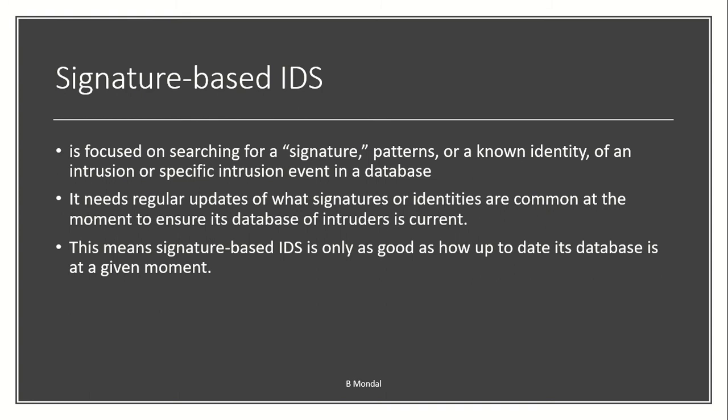The signature or identity of an intrusion is stored in a database which has been maintained previously in the IDS. It needs to update the database regularly; otherwise, if there is a new signature, it will not be able to find it. So it is good for known attacks — that is, if attacks are known to the people configuring or developing the IDS, it is efficient for detection of that kind of attack.